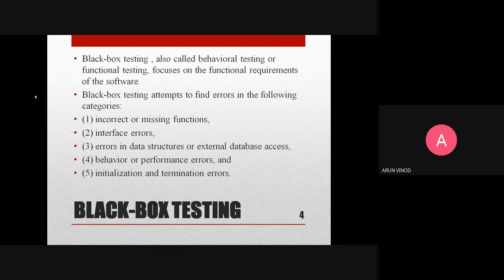Black box testing is also called behavioral testing or functional testing — we test whether the behavior is correct. Black box testing attempts to find errors in specific categories. The first category is incorrect or missing functions: if the output doesn't meet the functional requirements, it is an incorrect function; if the function was never implemented, it is a missing function.